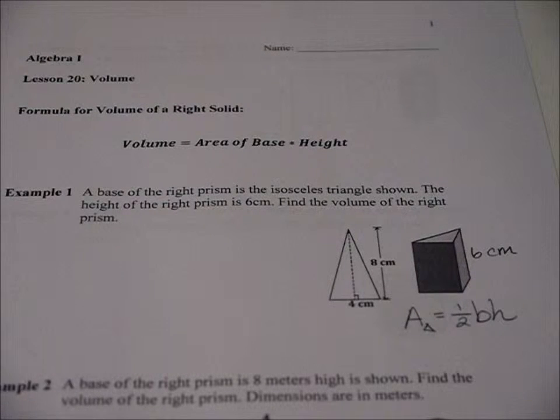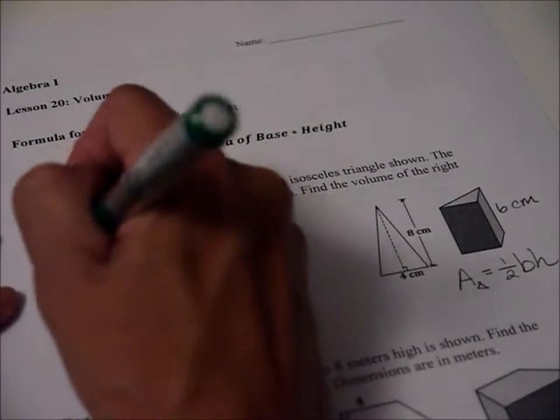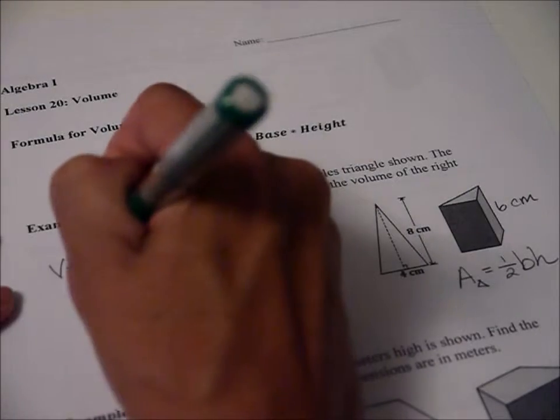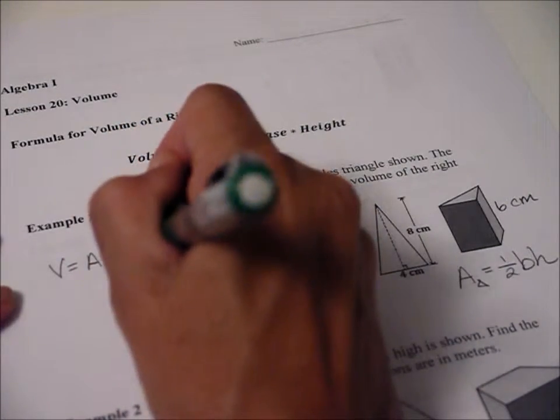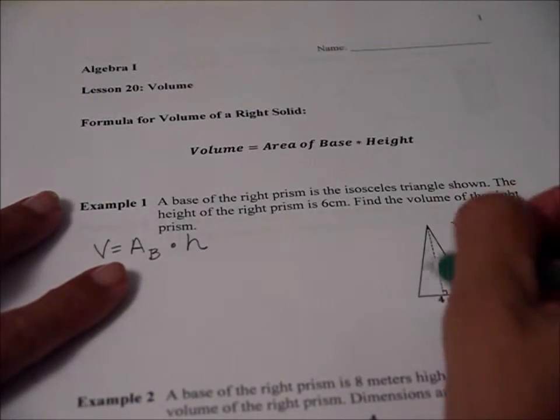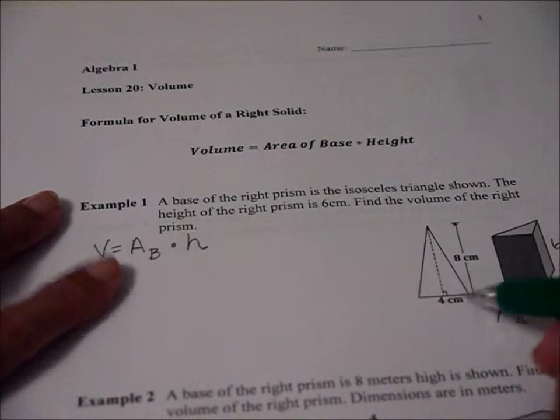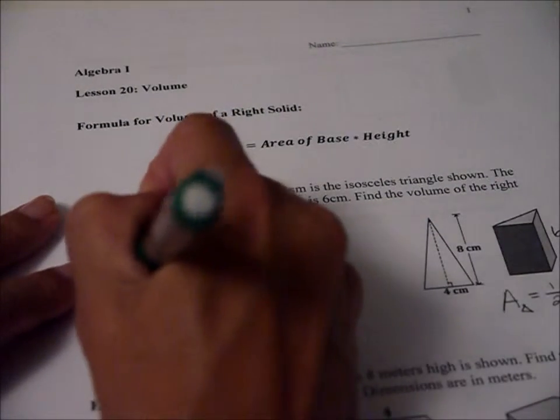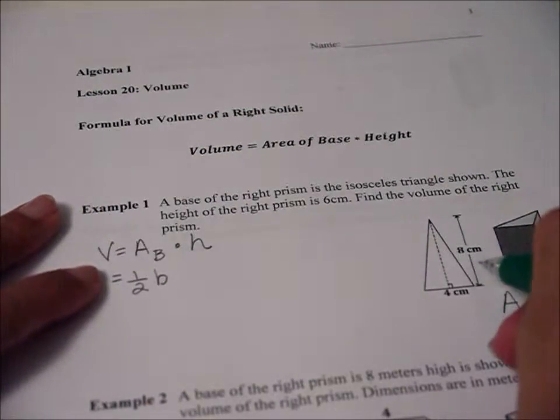Prism, not prison. Do you feel like you're in prison right now? You might. So I'm going to write volume equals area of the base times height. How do we find the area of the base? Well, this is the base. So we just want the area of this triangle. The area of this triangle is one-half base times the height of the triangle.